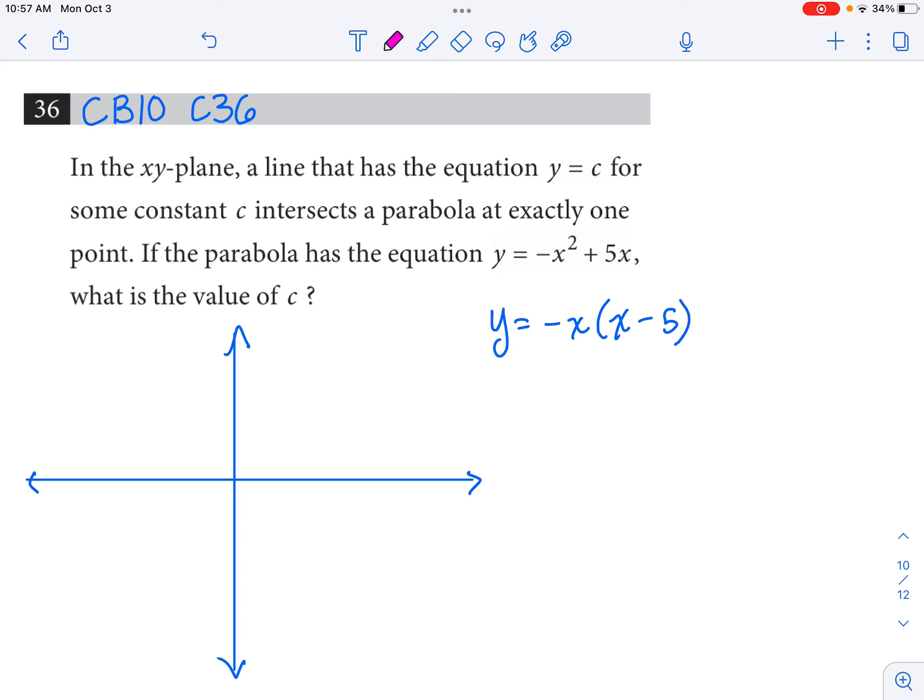Alright, so there's a lot going on in this setup, but I think the first thing I want to do is pick apart the equation for this parabola. If I take y equals negative x squared plus 5x, I'm going to factor this. I'm going to factor out a negative x, and I'm left with y equals negative x times x minus 5, which I've already pre-written here on my iPad.